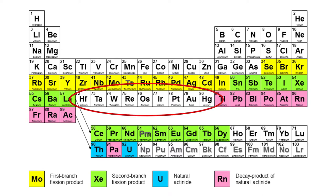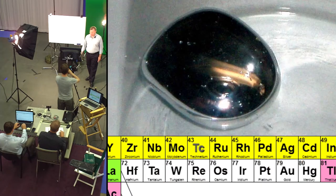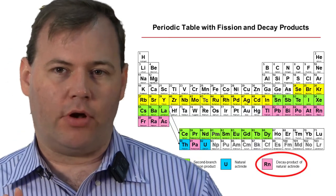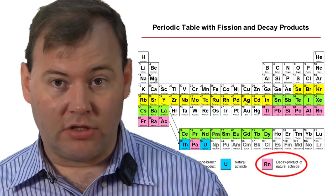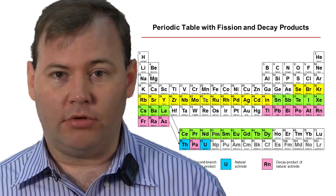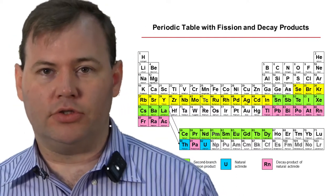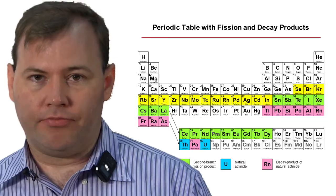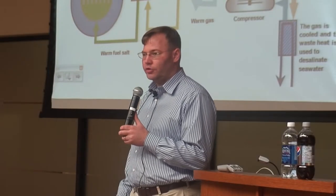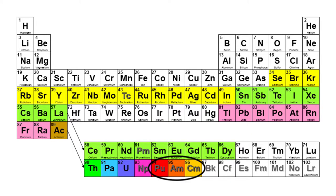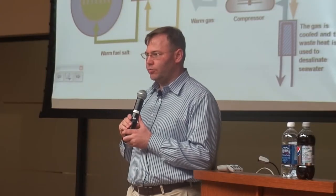There's a gap in the periodic table where certain elements simply are not made by fission — tungsten, gold, mercury, none of those are made by fission. When you get to thallium, you're getting to what's called the decay products. These are not formed by fission; they're formed when you leave uranium, thorium, and plutonium alone for hundreds or thousands of years — they decay into these products, shown in pink on the chart. Then there are the transuranics: what happens when uranium absorbs a neutron and doesn't fission. It turns into plutonium, americium, curium, and others — but the overwhelming majority of transuranics are plutonium.